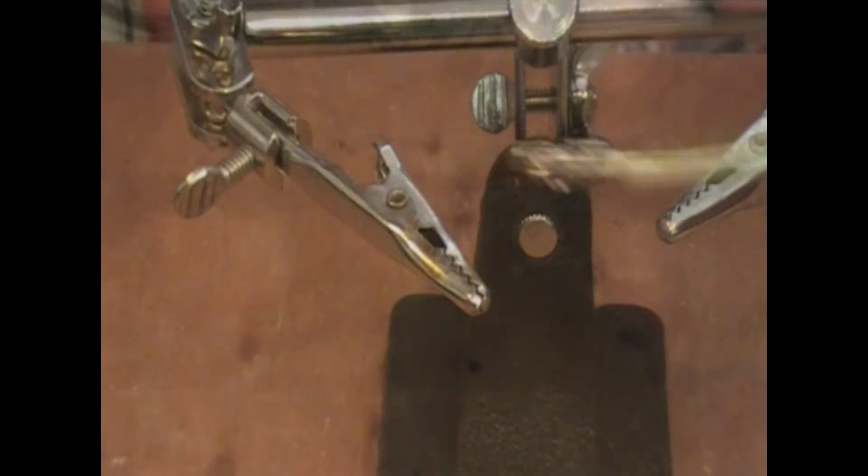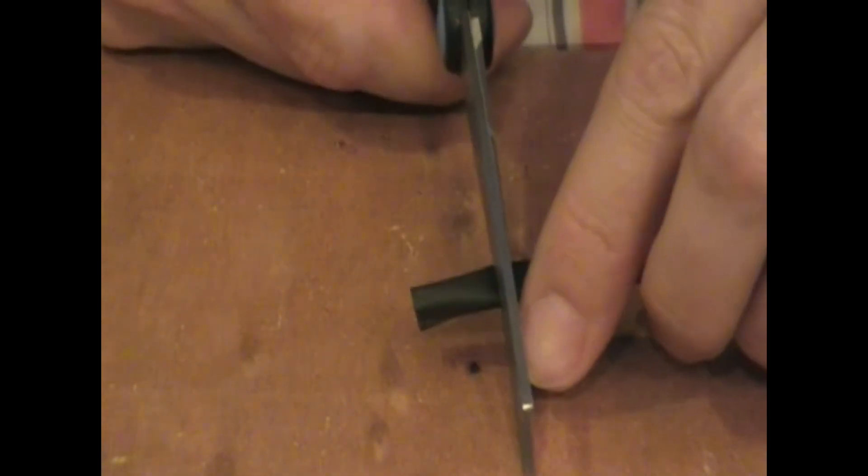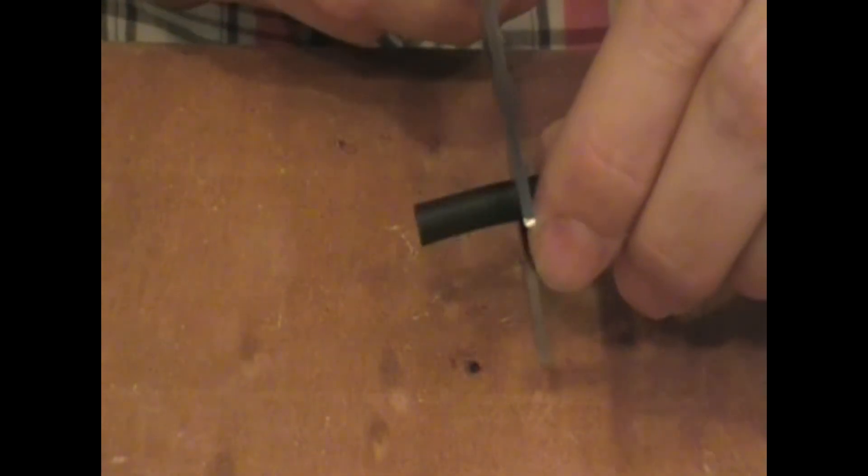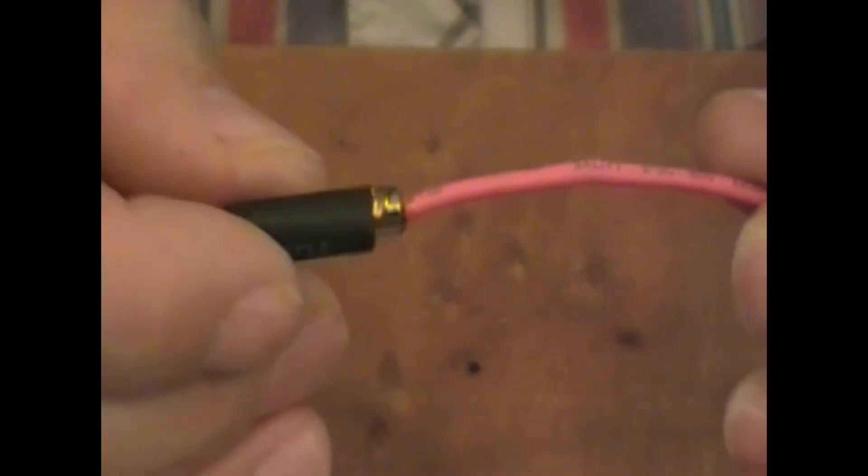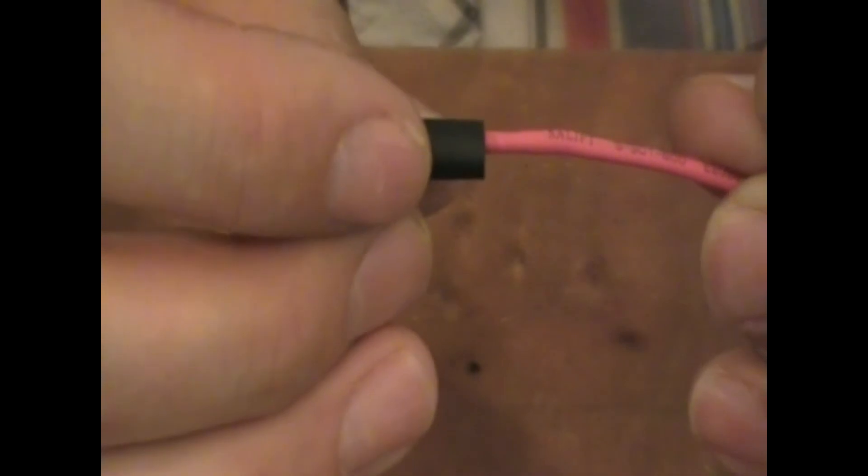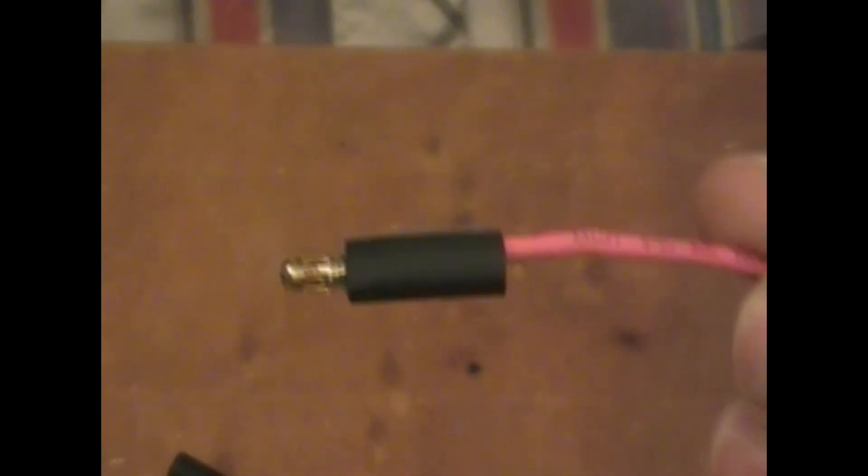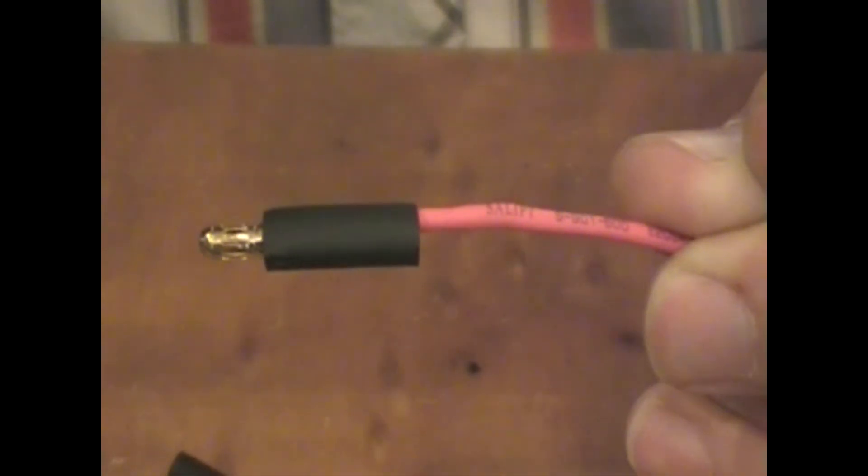And then we'll prep our shrink tube. I like to cut mine about three quarters of an inch long so that I have enough to cover the back end of the connector and then up the wire. Place it on so that you cover the back half so when your two connectors meet they join.